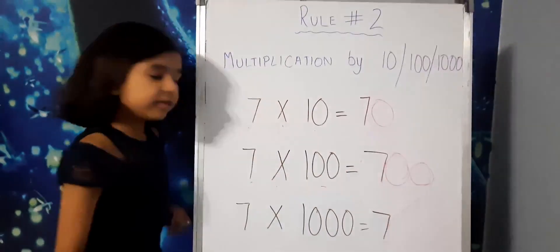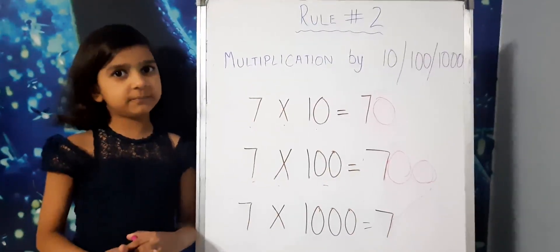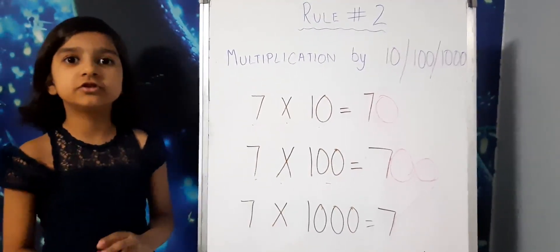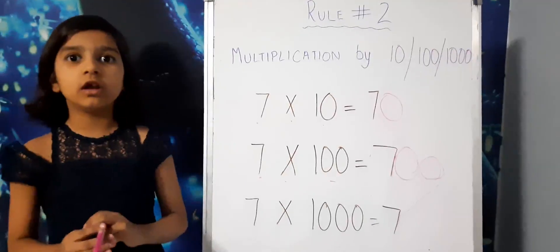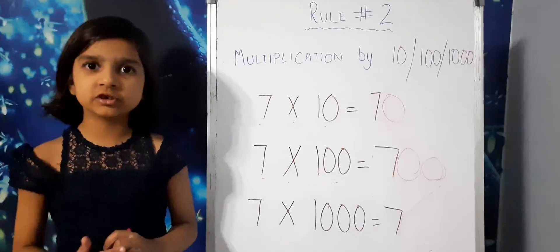The answer will be 700. Now let's see what will happen if I multiply 7 by 1,000.